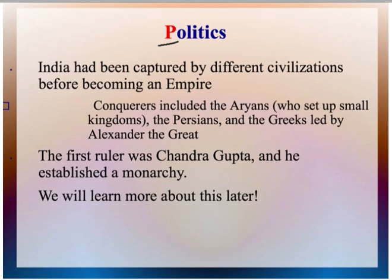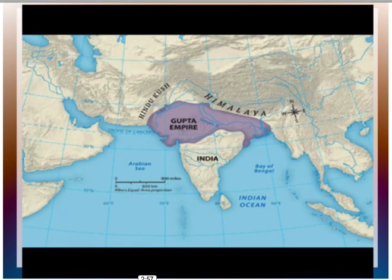On to politics. India has been captured by many civilizations before becoming an empire. Conquerors included the Aryans, who set up small kingdoms, Persians, and the Greeks, led by Alexander the Great. The first ruler of India who was part of the Indian Empire — Chandragupta — established a monarchy known as the Maurya Empire. We will also learn about this later; there's a DBQ we're going to do in about two weeks. It will explain all about the Maurya Empire and actually Chandragupta's grandson, Ashoka. You can see that the Chandragupta Empire took over quite a good portion of India.